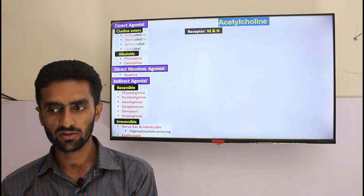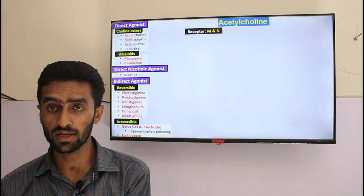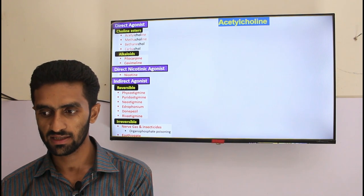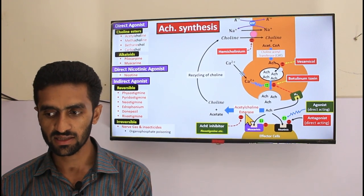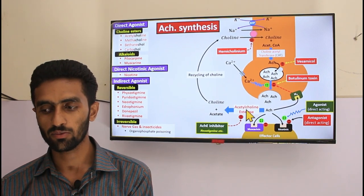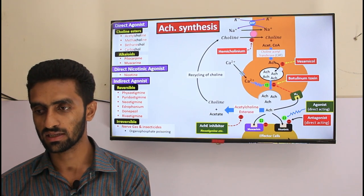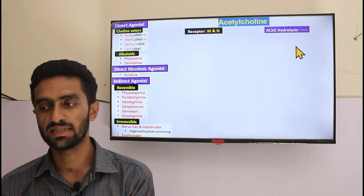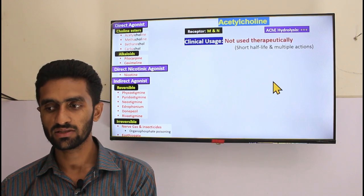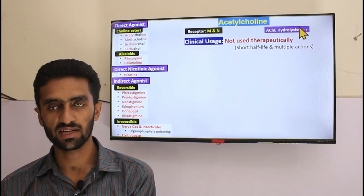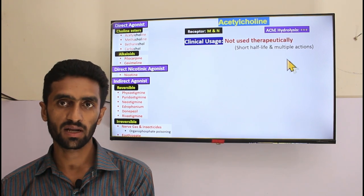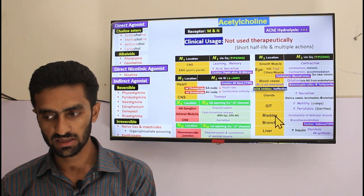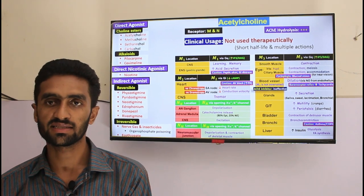Starting with acetylcholine directly: it stimulates receptors throughout the parasympathetic nervous system and is hydrolyzed by acetylcholinesterase. Some drugs are resistant to this hydrolysis. Acetylcholine is easily degraded by acetylcholinesterase. Clinically it is not used: number one because of its short half-life due to hydrolysis, and number two because of its multiple actions stimulating all receptors, causing many side effects.